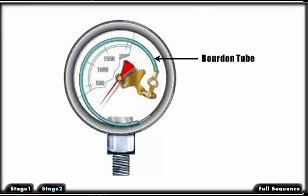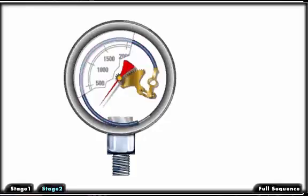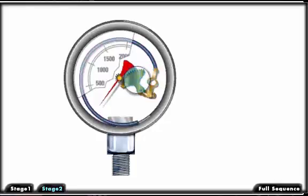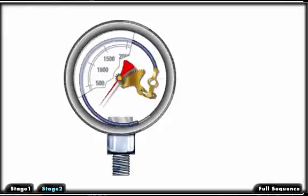The bourdon tube is a coiled metal tube connected to system pressure. Any increase in pressure within the system causes the tube to straighten out. The end of the tube is connected to a mechanical linkage which turns a gear. This gear, in turn, meshes with a gear, driving the pointer needle. Watch now as the tube is pressurized, causing the needle to turn and give the new system pressure.